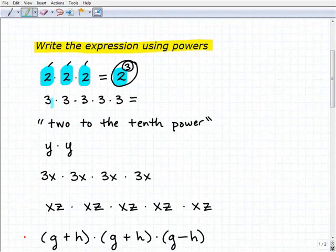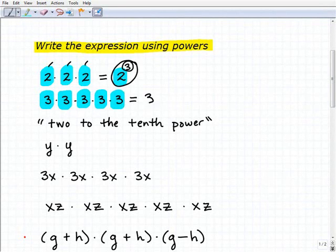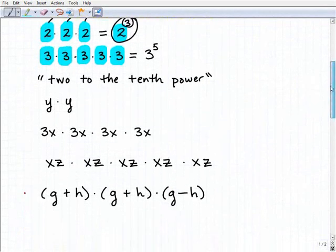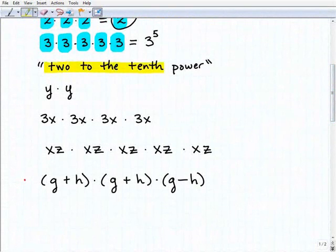Moving on, you might want to try this problem. Same thing, there's not any trick questions here, it's just basically practice. We're taking 3, we're multiplying by itself 1, 2, 3, 4, 5 times. So that is 3 to the fifth power.